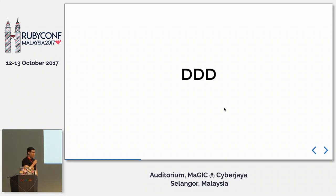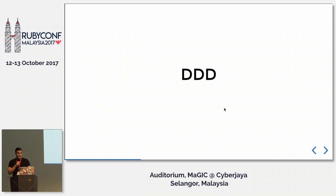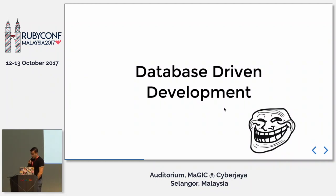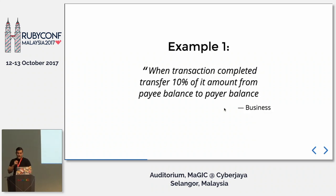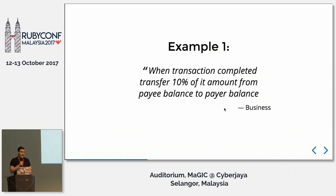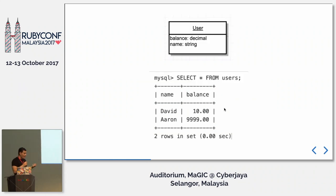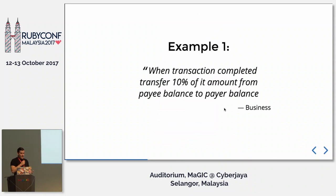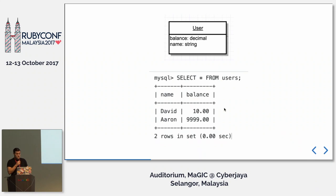And I want to talk about DDD today. And DDD here is not the holy grail DDD that you know — it's the one we often use: database-driven development. Database-driven development is what we often do when we start an application. Let's say I transfer money and need to adjust the balance for the payee and buyer. I just came up with this example. And you think: okay, I have users and they have transactions, and users probably have a balance. So I will create a users table with a balance, and create transactions that connect users with a certain amount.